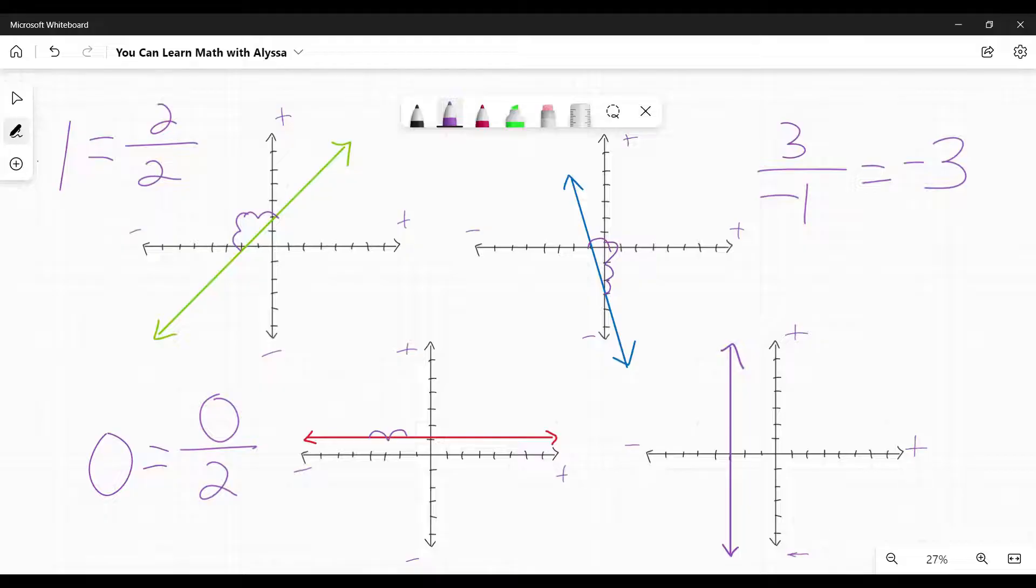Lastly, our vertical line. If I start at a point, I might go up three, but I don't go anywhere. I don't go right or left. So my rise is three, but my run would be zero. I cannot divide by zero, so this has an undefined slope. All vertical lines have an undefined slope.